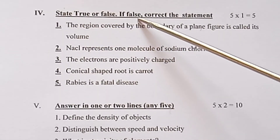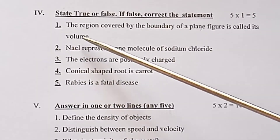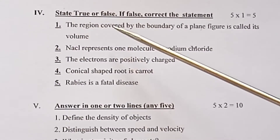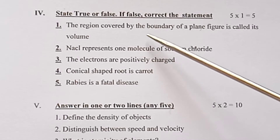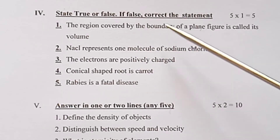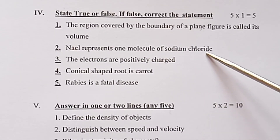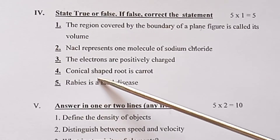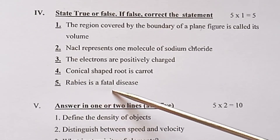Rominator 4: State True or False — 5 into 1 is equal to 5. First: The region covered by the boundary of a plane figure is called its volume. Second: NaCl — 1 molecule of sodium chloride. Third: Conical shaped roots — Carrot. Fourth: Rabies is a fatal disease.